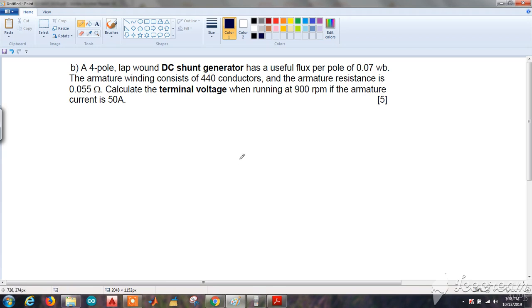A 4-pole lap wound DC shunt generator has a useful flux per pole of 0.07 Weber. The armature winding consists of 440 conductors and the armature resistance is 0.055 ohms. Calculate the terminal voltage when running at 900 RPM if the armature current is 50 amperes.